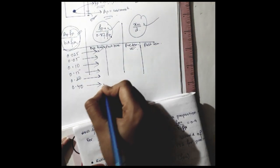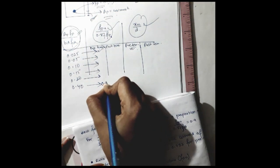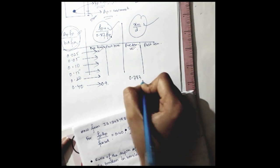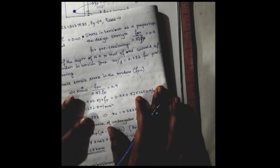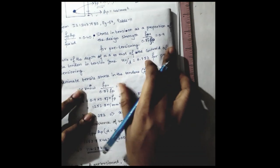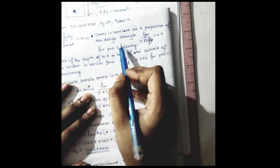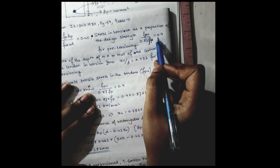It is for pre-tension. This value will be 0.90 and xu by d will be 0.783. So I have written only this thing here.